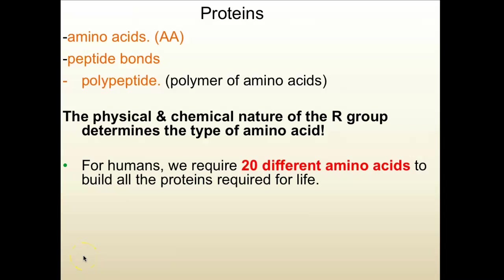This is part two, and we're beginning with proteins as molecules. So proteins are also polymers. The monomers of proteins, as you can see in your outline, are called amino acids. Amino acids are the building blocks of proteins, sometimes abbreviated AA.